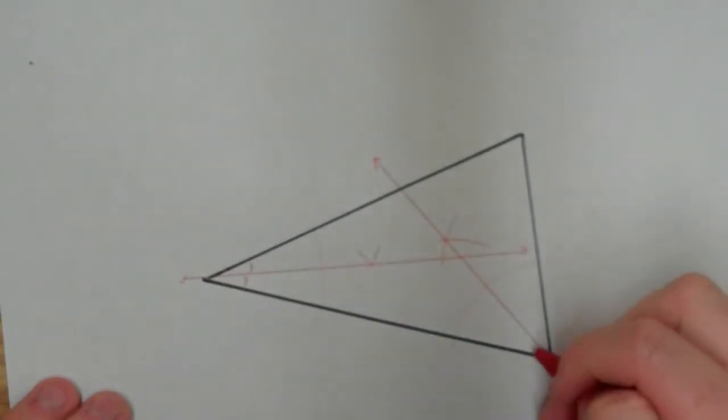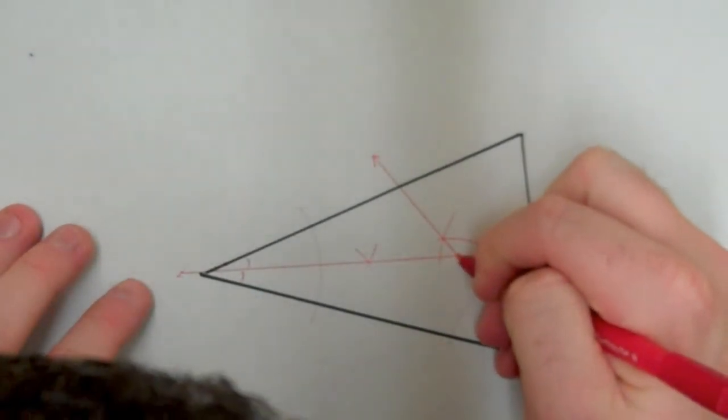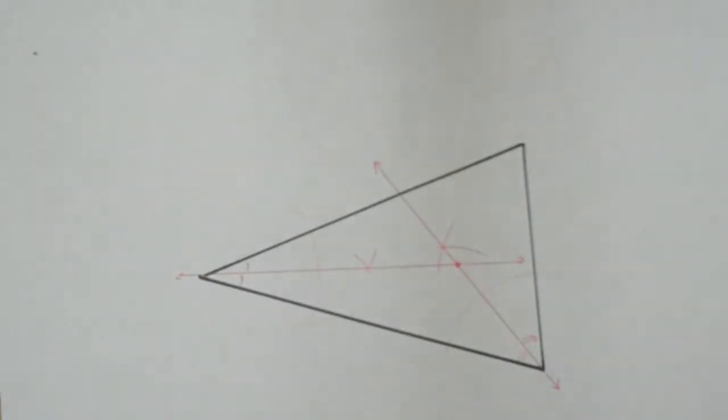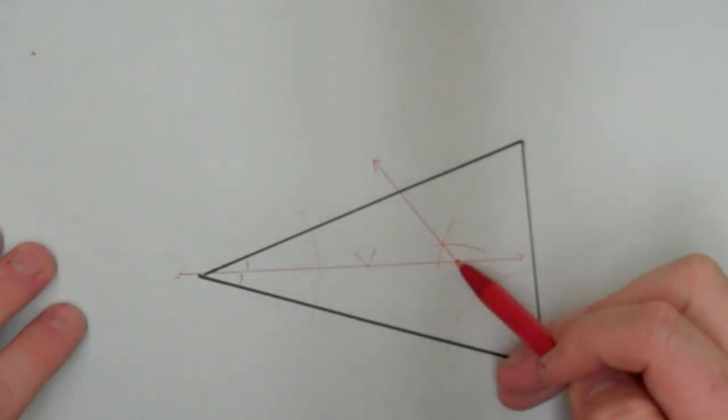So now what I've done is I've created the angle bisectors of this angle and this angle. And so this intersection point right here should be my in-center. So theoretically, if I've done this correctly,